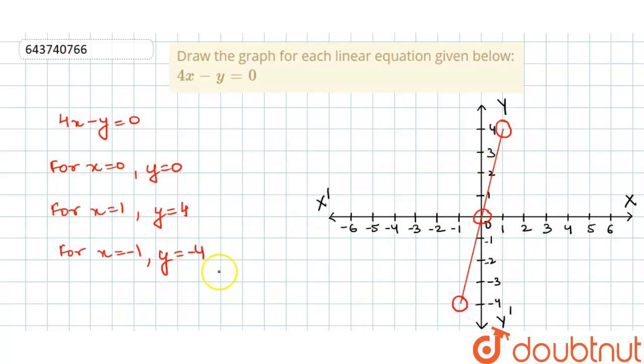So this is our line and the equation of our line is 4x minus y is equal to 0. And you can also extend these lines furthermore.